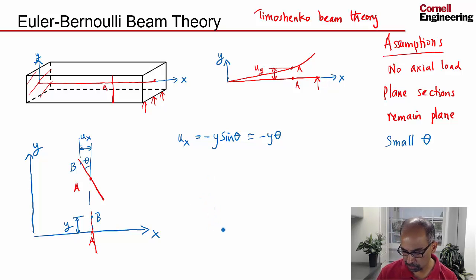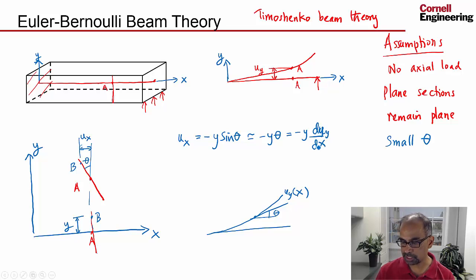And then now what you do is you say, I'm looking, I'll assume that theta is small, and so this can be written as minus y theta. One more thing you do is, so you have this midline over here, and it deforms something like that. And if you look at the slope at that location, that slope is the same theta. So whether you're looking at the rotation of the cross section or whether you're looking at the slope, they're the same theta, and that theta then is given by just, so this is u y of x, and so that's just equal to the slope, and the slope is d u y by d x.